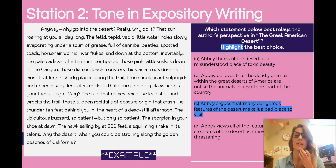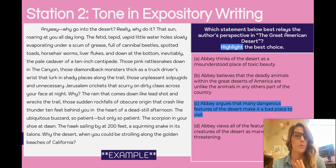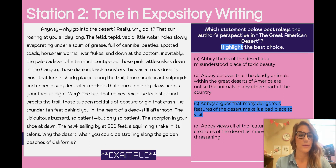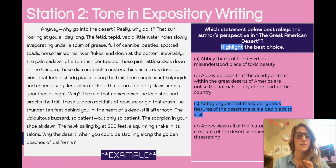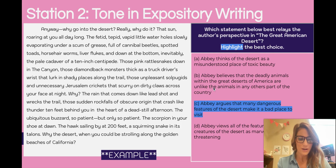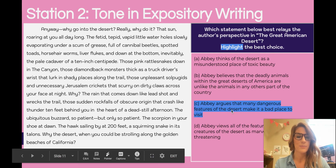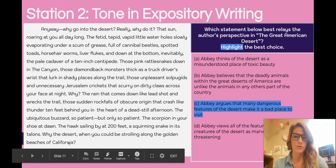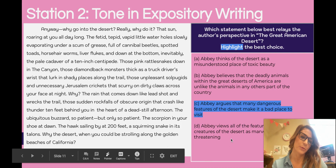Finally, let's look at perspective. What's the author's perspective on the desert? The question asks: which statement best relays the author's perspective in 'The Great American Desert'? Option A — 'Abbey thinks the desert is a misunderstood place of toxic beauty' — absolutely not; he doesn't think anything is beautiful about this place. Option B — comparing desert animals to other parts of the country — no, he's not really comparing. Option C — 'Abbey argues that many dangerous features of the desert make it a bad place to visit' — yes, especially with that last line about strolling on the golden beaches of California. That's our clear winner.